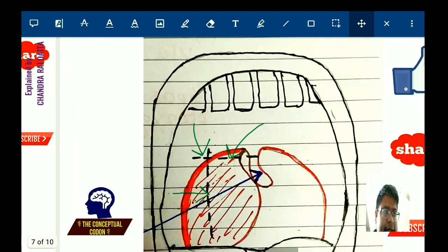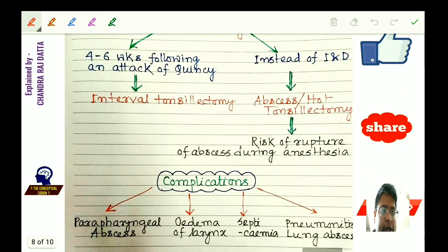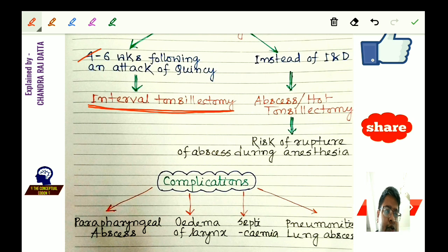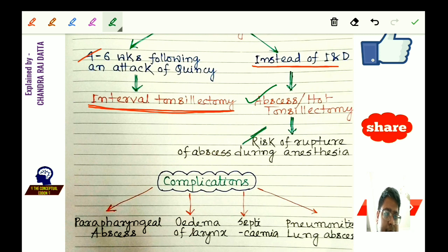After incision and drainage, tonsillectomy may follow. Some surgeons prefer interval tonsillectomy, performed four to six weeks after the attack of peritonsillar abscess. Others prefer abscess tonsillectomy, also called hot tonsillectomy, done immediately instead of incision and drainage. However, hot tonsillectomy carries disadvantages including risk of abscess rupture during anesthesia and risk of heavy bleeding during the operation.